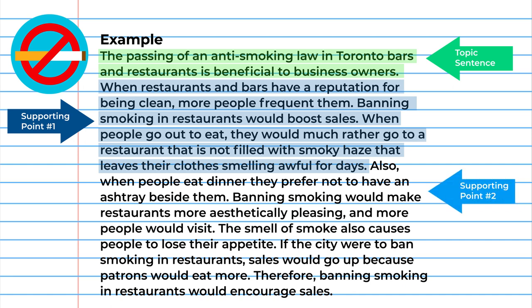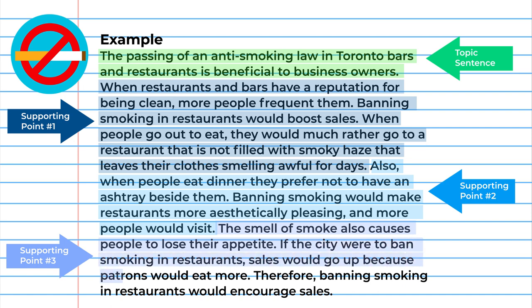The second point: also, when people eat dinner, they prefer not to have an ashtray beside them. Banning smoking would make restaurants more aesthetically pleasing, and more people would visit. And the last point: the smell of smoke also causes people to lose their appetite. If the city were to ban smoking in restaurants, sales would go up because patrons would eat more.